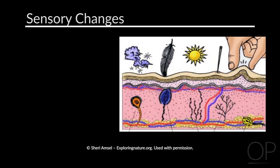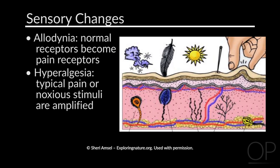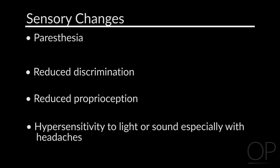Sensory changes occur, such as allodynia, where normal receptors become pain receptors. Patients may also present with hyperalgesia, where typical pain or noxious stimuli are amplified. Patients frequently describe paresthesias, reduced discrimination, and reduced proprioception, which is the awareness of joint position and movement. In patients with headaches, they present with increased sensitivity to light and or sounds.